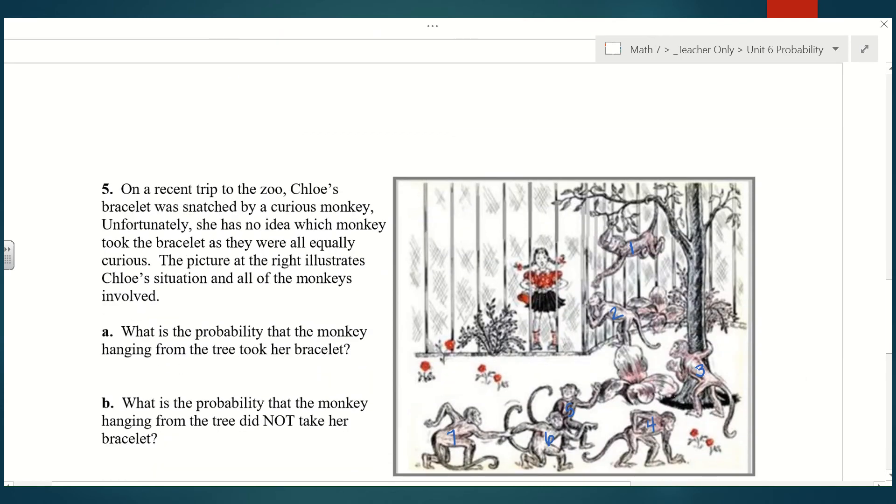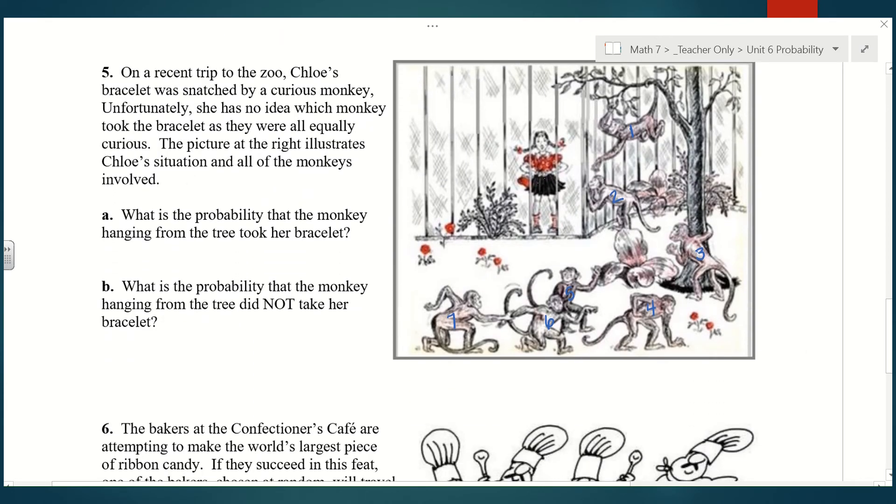Number five. On a recent trip to the zoo, Chloe's bracelet was snatched by a curious monkey. Unfortunately, she has no idea which monkey took the bracelet as they were all equally curious. The picture at the right illustrates Chloe's situation and all of the monkeys involved. What is the probability that the monkey hanging from the tree took her bracelet? First we need to figure out how many monkeys are in this picture. You can see I kind of labeled them, one, two, three, four, five, six, seven. The number of monkeys hanging from the tree is only one, so the chance that that is the monkey that took the bracelet would be 1/7.